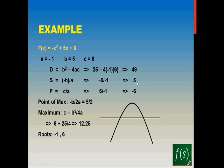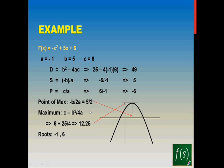Since the sum is positive and the product is negative, one root is positive and the other is negative. Since the sum is positive, the positive root is bigger than the negative root, meaning the maxima lies on the right-hand side of the y-axis. To find precise points: the roots are −1 and 6. The point of maxima is given by −b/2a = 5/2. The value the expression takes at the point of maxima is 12.25.